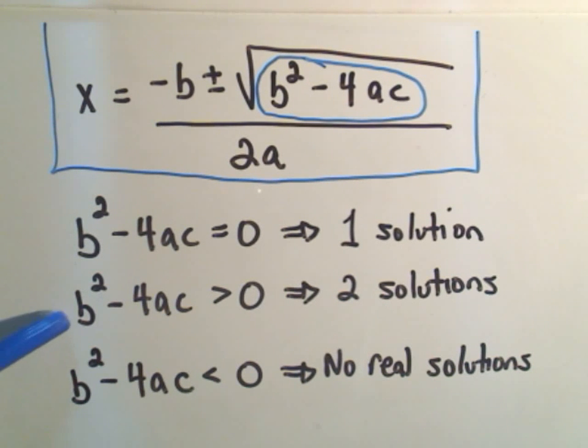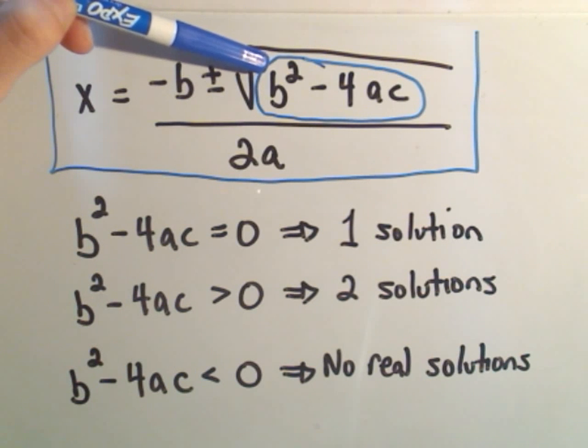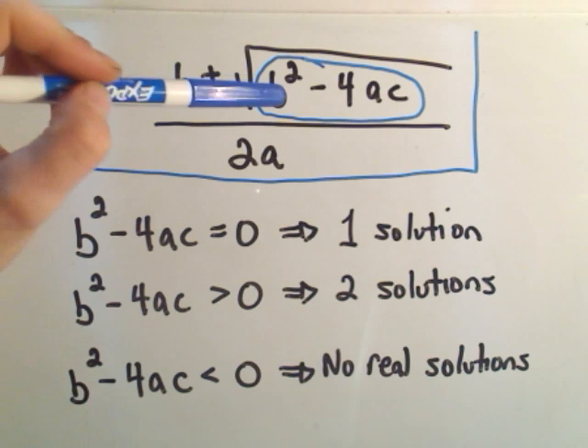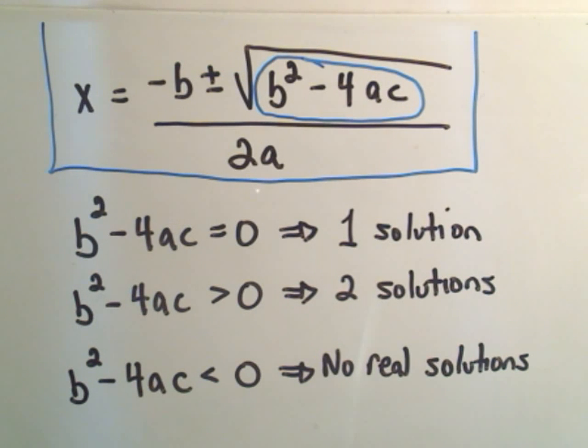It says if the stuff underneath the square root is positive, you're going to get two solutions. And again, suppose the stuff underneath the square root works out to be, say, 9. Then we'll be adding 3 and also subtracting 3 to get two different answers.